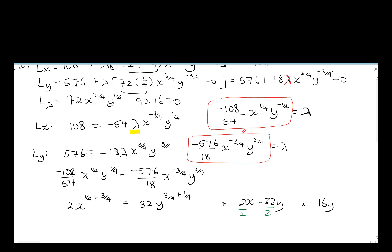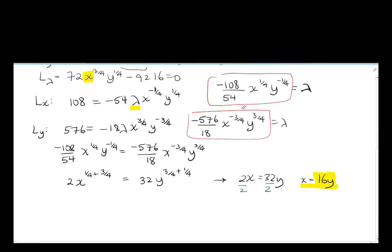So now I get an expression for x in terms of y, and guess where I plug that in? I put that into my constraint for the x right here. So 16y is equal to x, and I go plug that in. We end up with 72(16y)^(3/4)y^(1/4) minus 9216 equals 0.